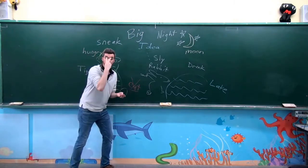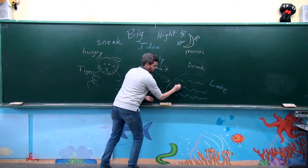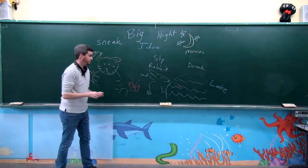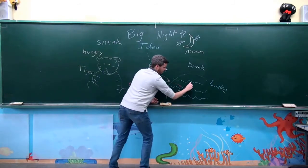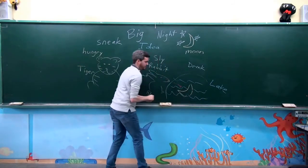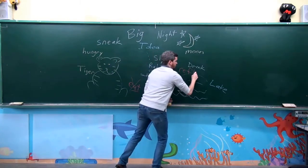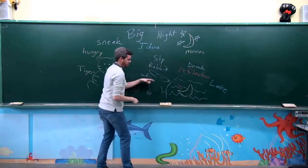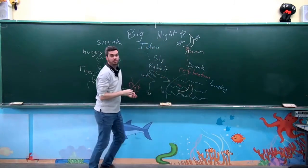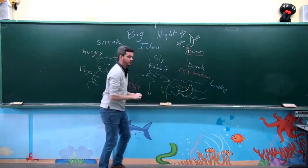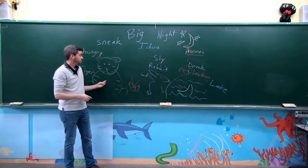The rabbit looks and looks into the lake, into the water. And the rabbit sees a big moon. The rabbit sees a reflection. A reflection. He is looking into the water and he sees the reflection of the moon. The rabbit is very smart. Very sly.